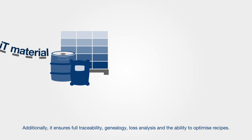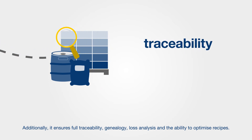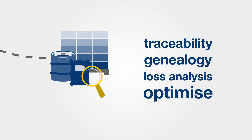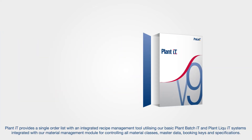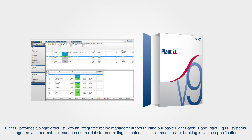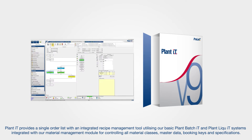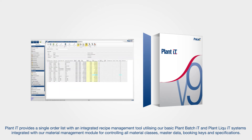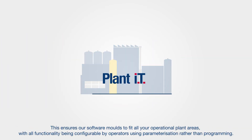Additionally, it ensures full traceability, genealogy, loss analysis and the ability to optimize recipes. Plant IT provides a single order list with an integrated recipe management tool, utilising our basic plant batch IT and plant liquid systems integrated with our material management module for controlling all material classes, master data, booking keys and specifications.